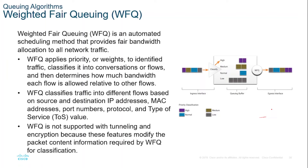WFQ then fairly shares the remaining bandwidth among high-bandwidth flows. WFQ allows you to give low-volume interactive traffic such as Telnet sessions and voice priority over high-volume traffic such as FTP sessions. When multiple file transfer flows are occurring simultaneously, the transfers are given comparable bandwidth. WFQ classifies traffic into different flows based on packet header addressing, including such characteristics as source and destination IP addresses, MAC addresses, port numbers, protocols, and type of service or TOS value. The TOS value in the IP header can be used to classify the traffic.